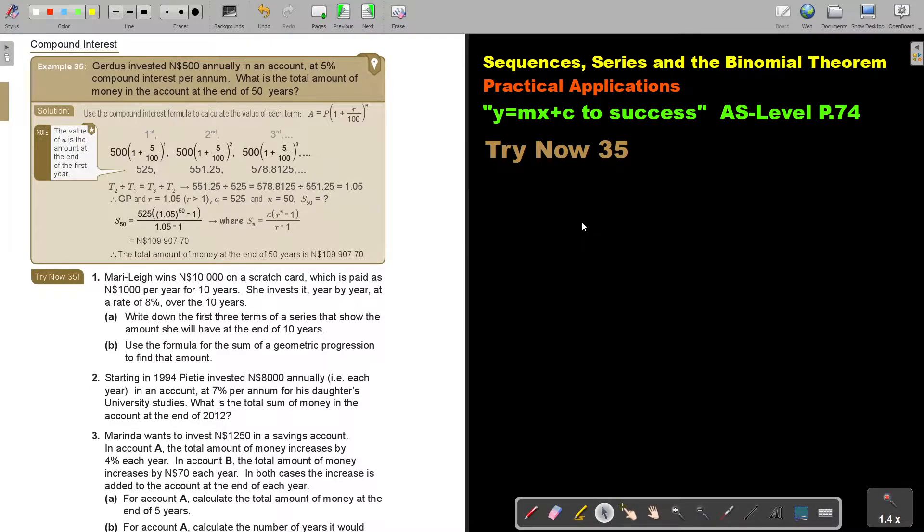In this video we are going to continue with practical applications. You will find this on page 74 in the Namibia AS level mathematics textbook, Y equals MX proceed to success. Let's look at a compound interest example. Gerdes invested 500 annually in an account at 5% compound interest per annum. What is the total amount of money in the account at the end of 15 years? Use the compound interest formula to calculate the value of each term. So just substitute in the place of R it's 5.